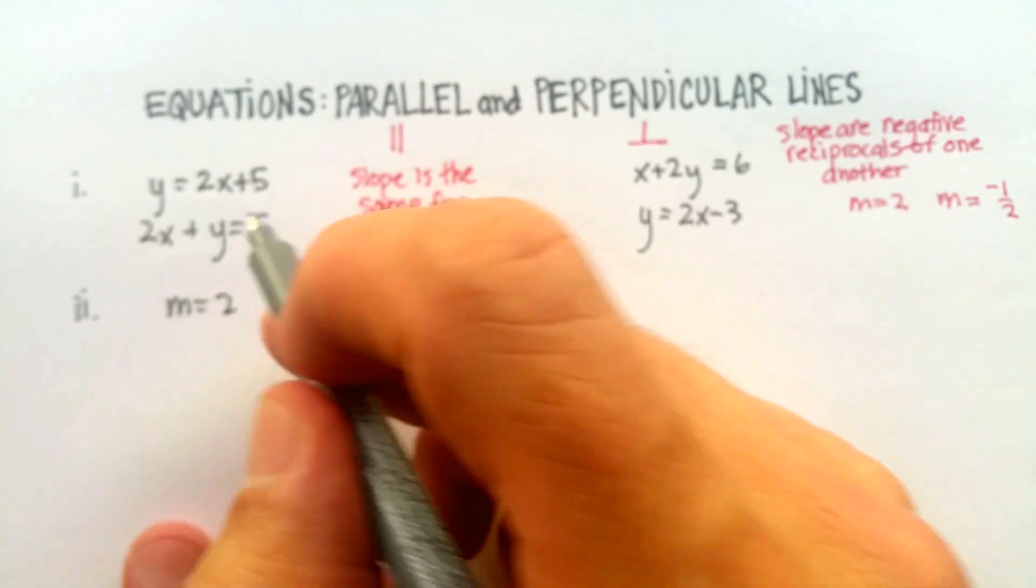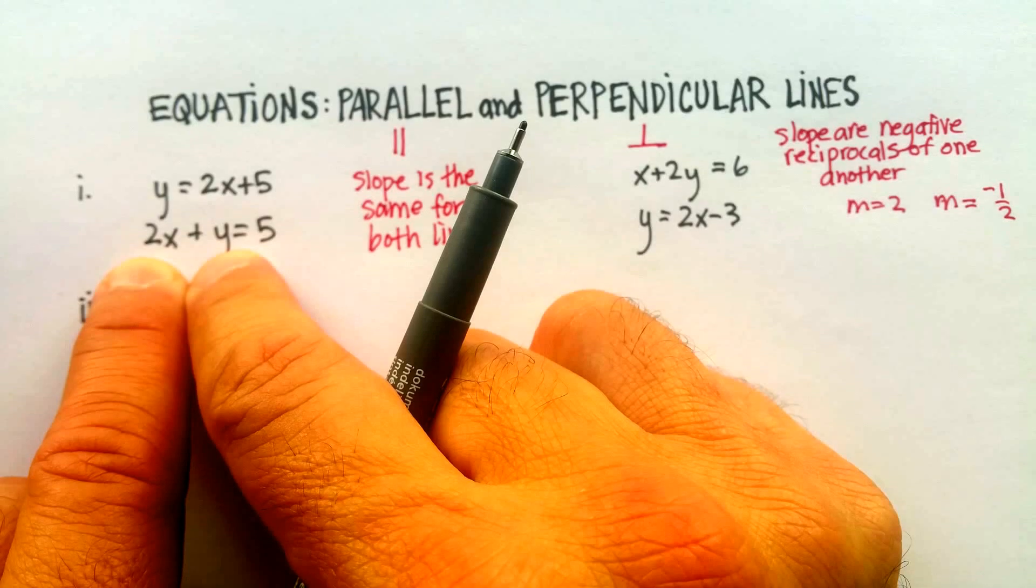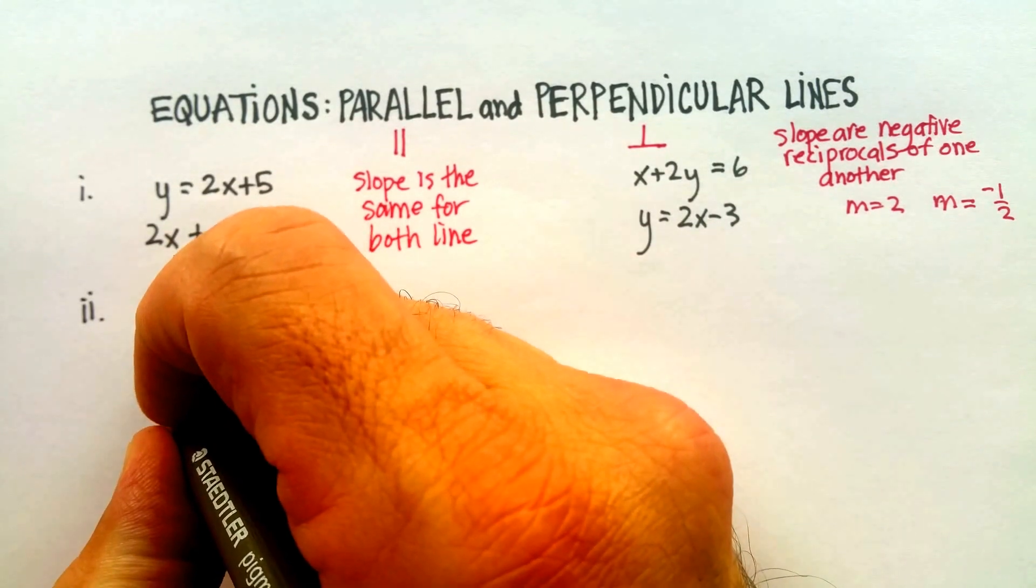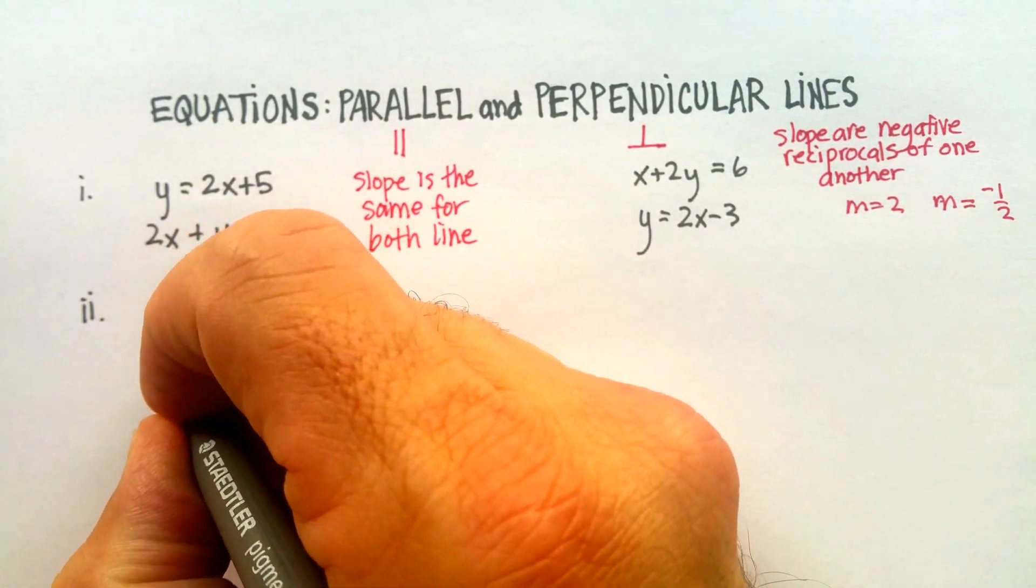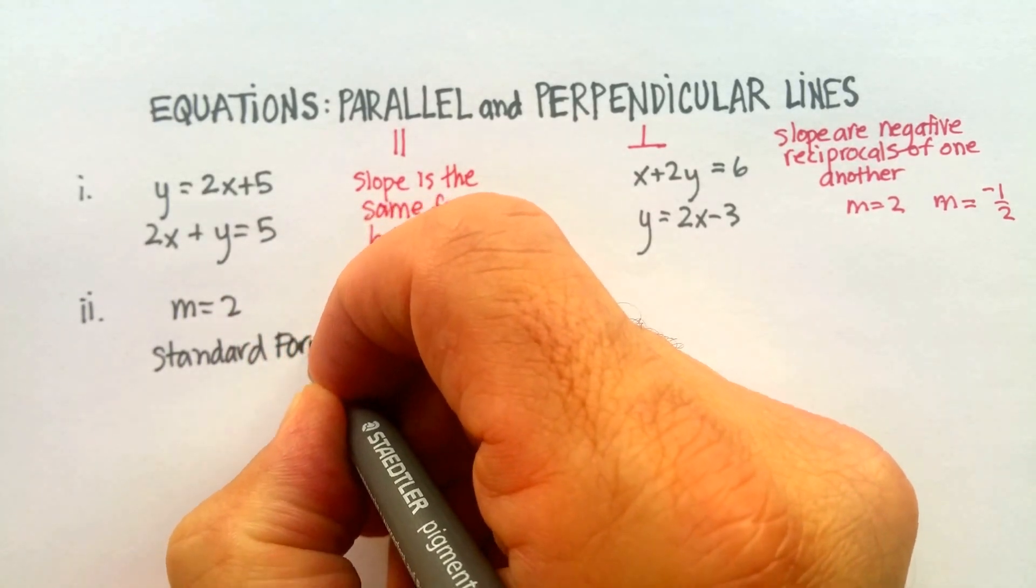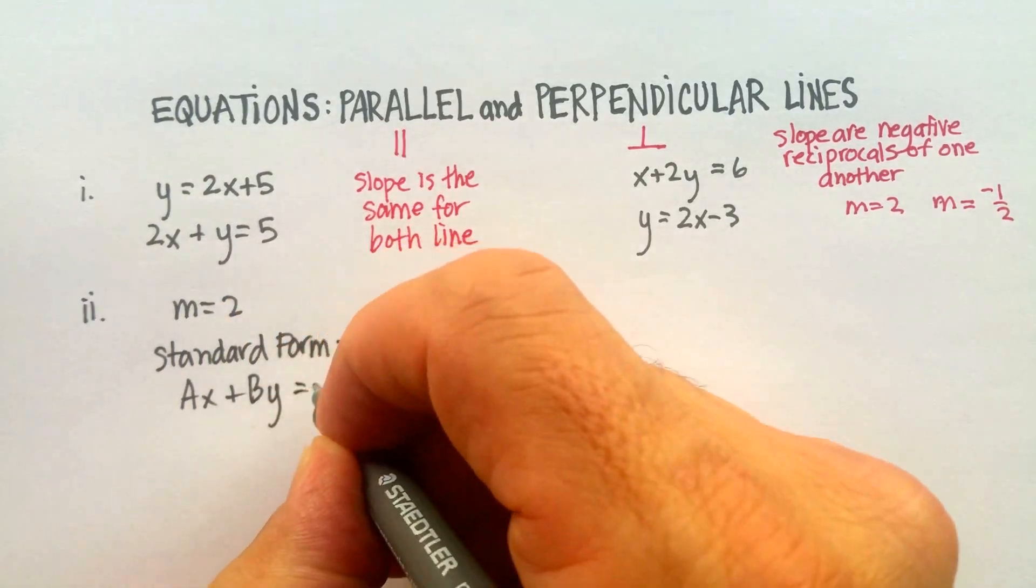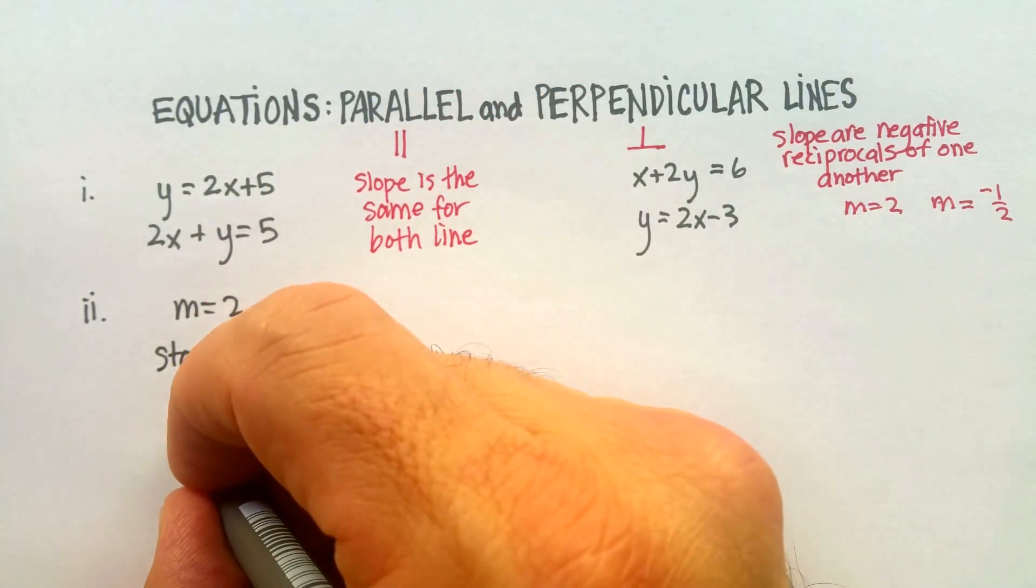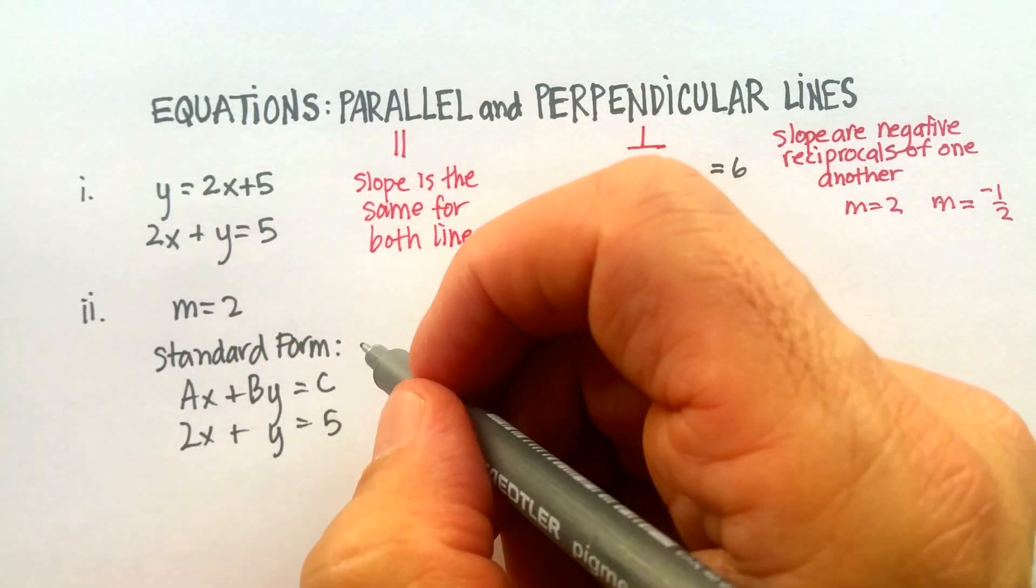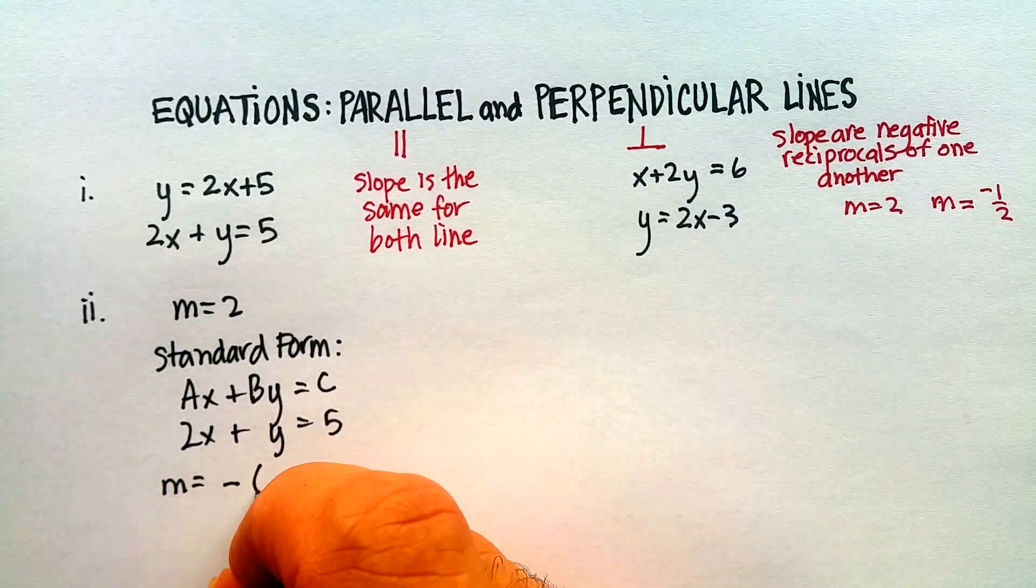Now in this form, this is called the standard form. The standard form is where both the x and the y are on one side of the equation, and then the number is on the other side of the equation. Now the slope for a standard form looks like this. So Ax plus By is equal to C. And you see that this 2x plus y equals 5 follows that form exactly.